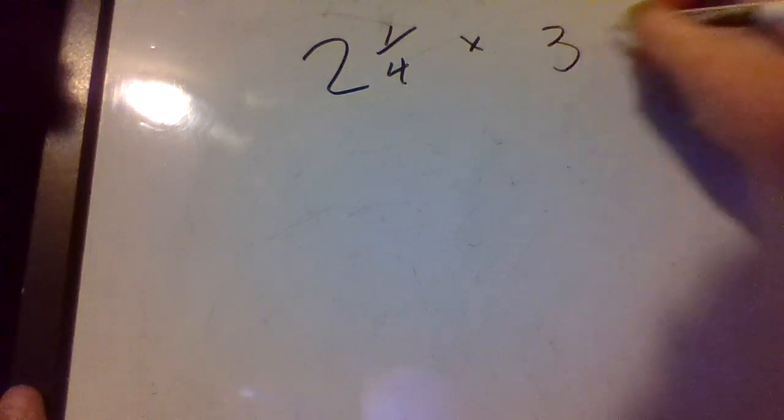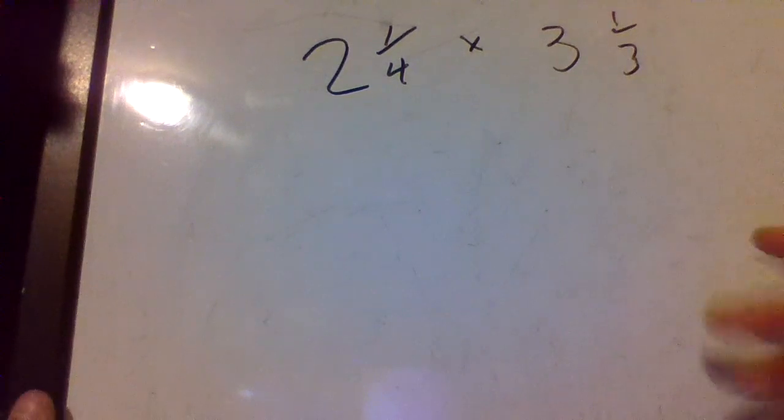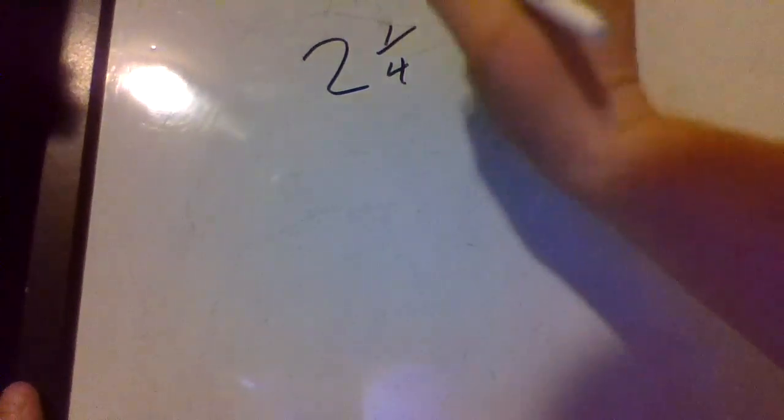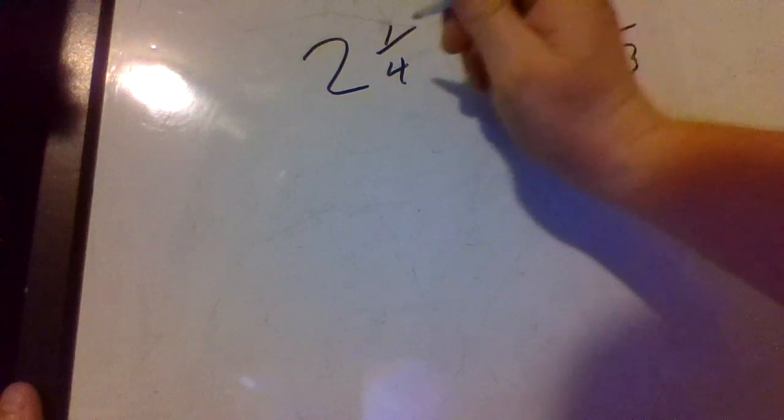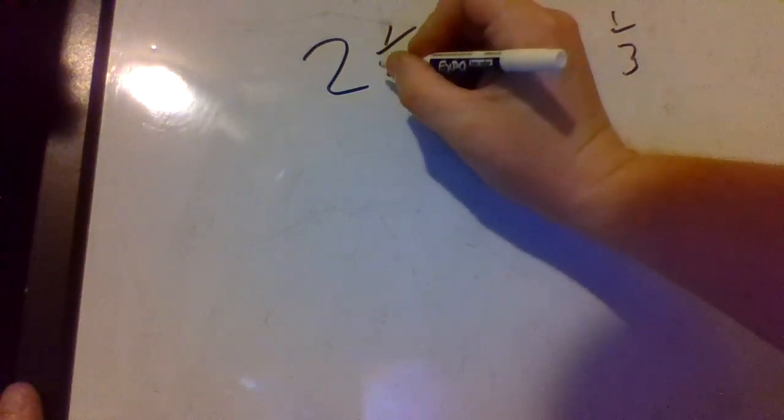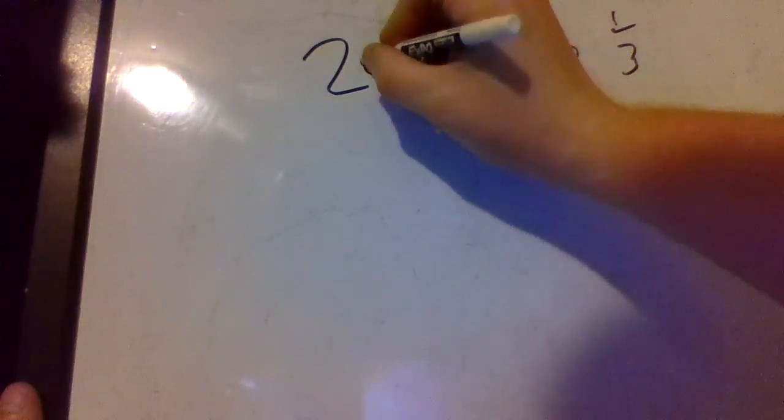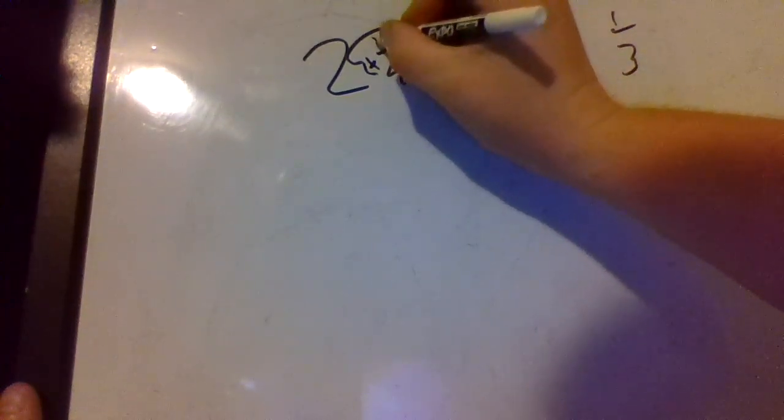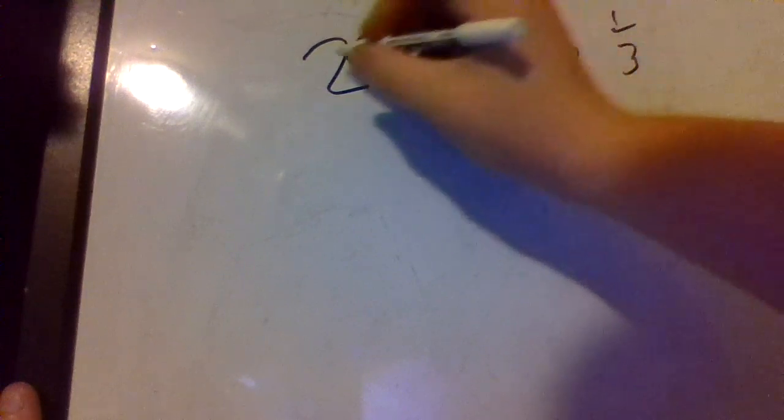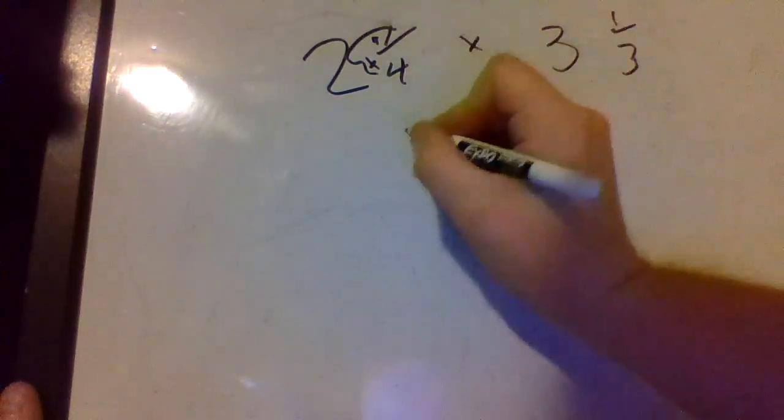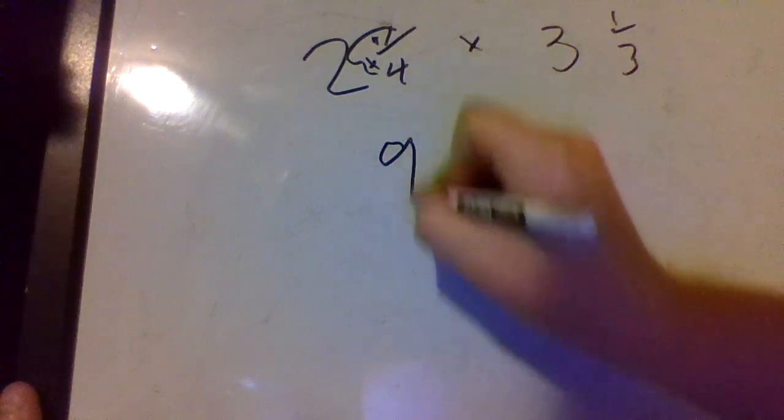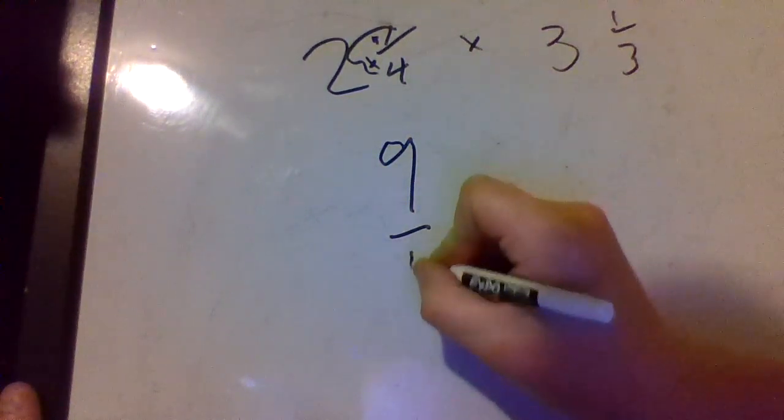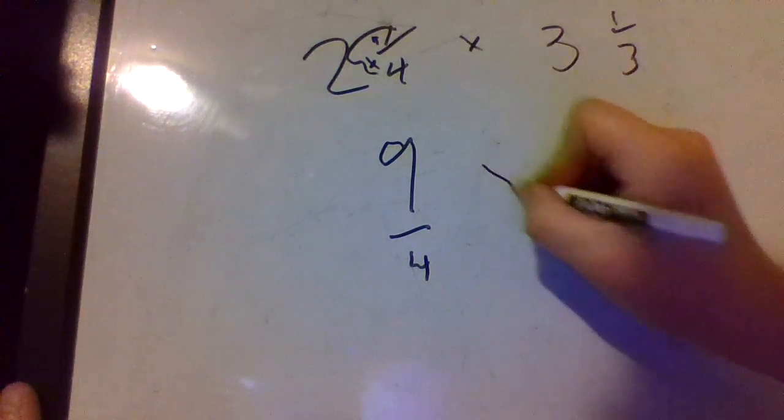So keeping with two and one fourth times three and one third. Pretty simple. Okay, so if you remember the way we turn mixed numbers into improper fractions, we multiply here and then we add here. So four times two is eight, eight plus one is nine. So we put our nine as our numerator and keep our four as our denominator.